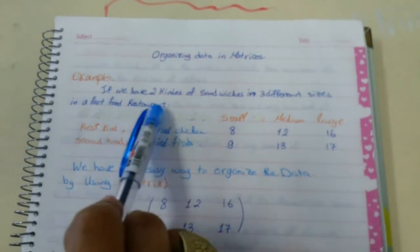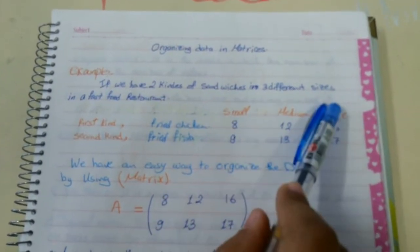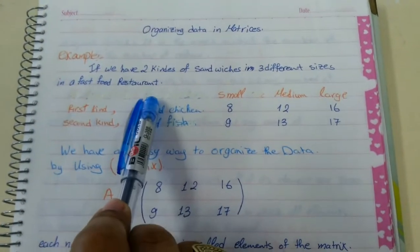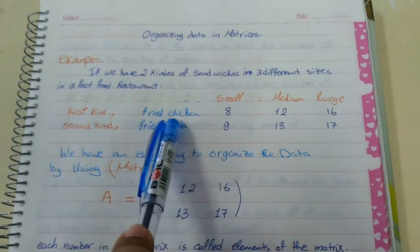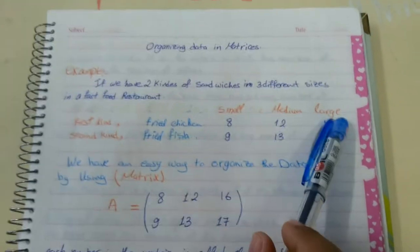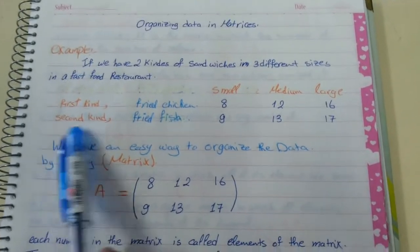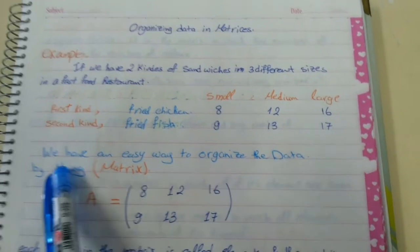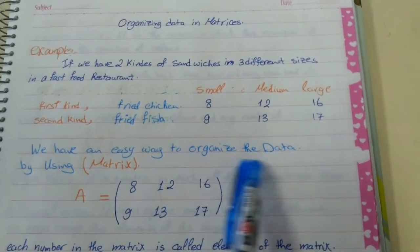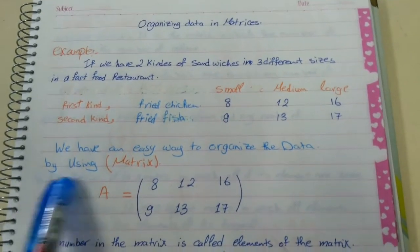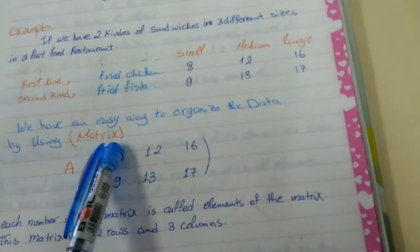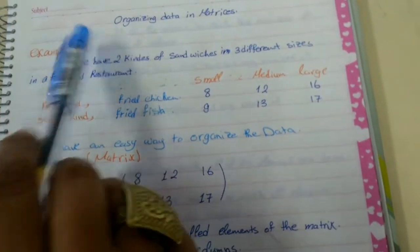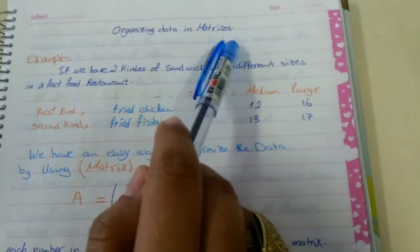If we have two kinds of sandwiches in three different sizes in a fast food restaurant. The first kind is fried chicken and has small, medium and large size. The second is fried fish and also has small, medium and large size. We have an easy way to organize the data by using something that is called matrix. Okay, so our lesson today is organizing data in matrices.